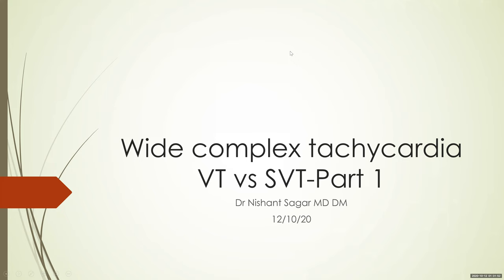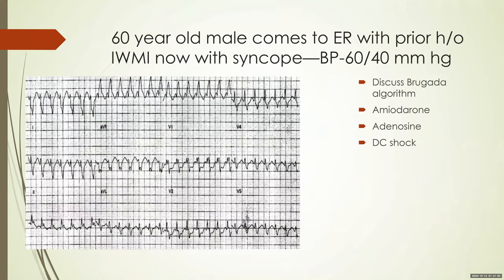We shall start with a hypothetical case. You have a 60-year-old male who comes to the ER with a prior history of inferior wall MI, now with syncope. His BP is 60/40 mmHg. The ECG shows a broad complex tachycardia. What do you do? Option one: show your extensive ECG knowledge and discuss the Brugada algorithm with colleagues. Option two: give IV amiodarone. Option three: give IV adenosine. Option four: give a DC shock.